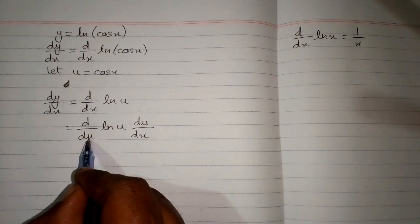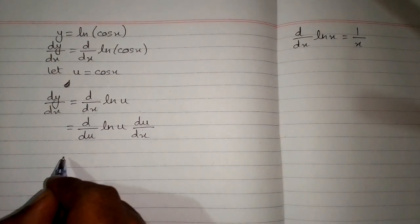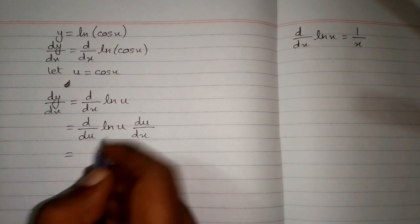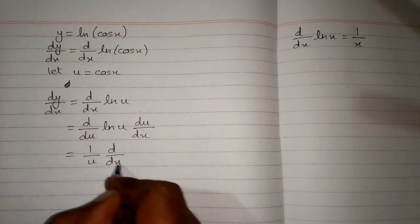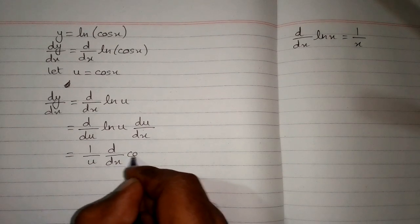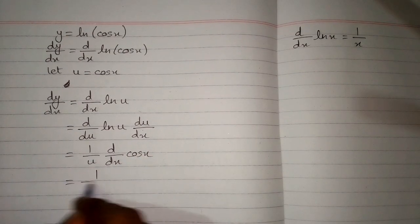Now these two variables are same. So we can apply this formula. And the derivative of ln of u is 1 upon u multiplied by the derivative of u. And u is cosine of x. Now we put the value of u over here.